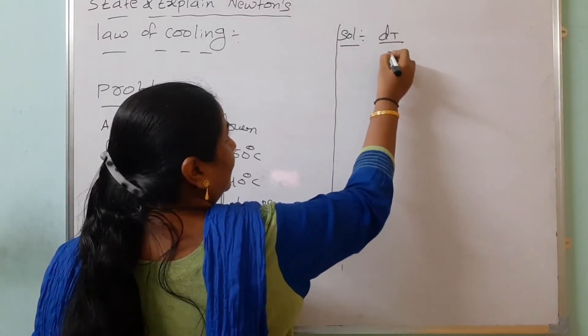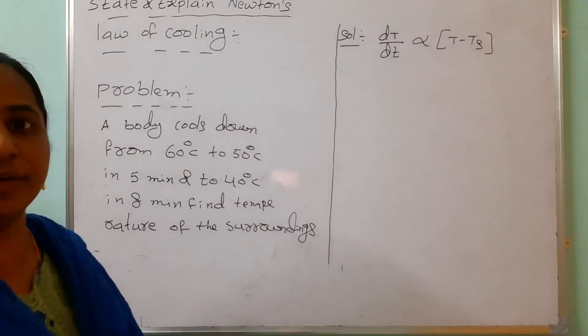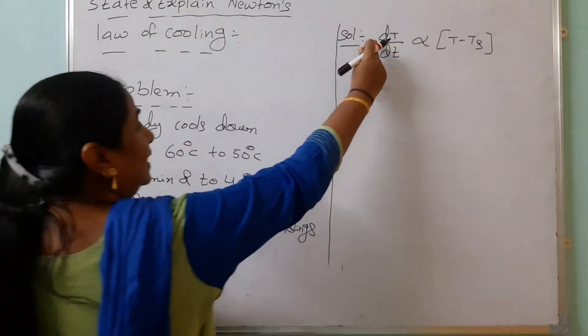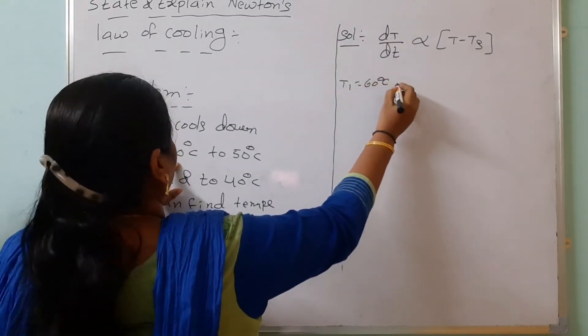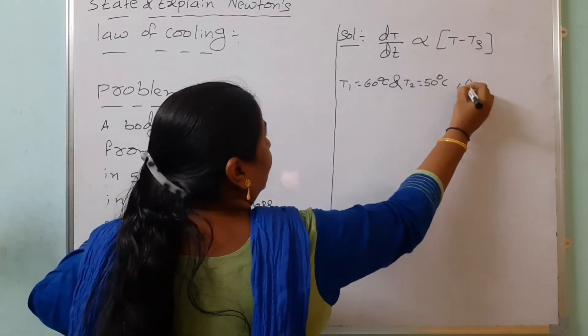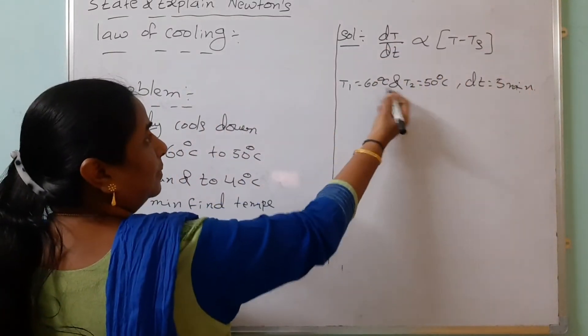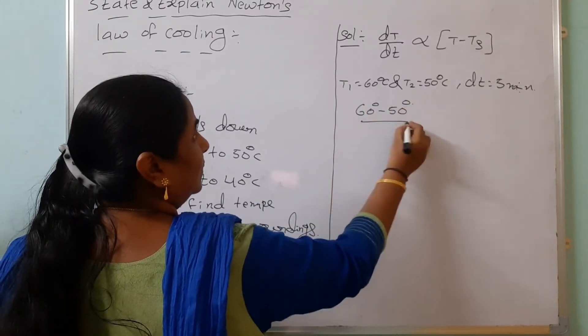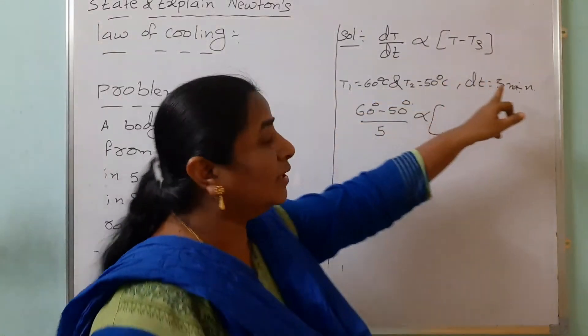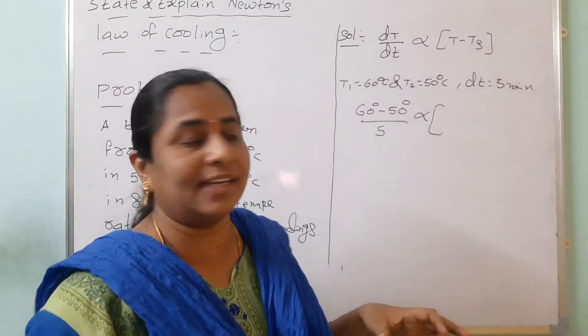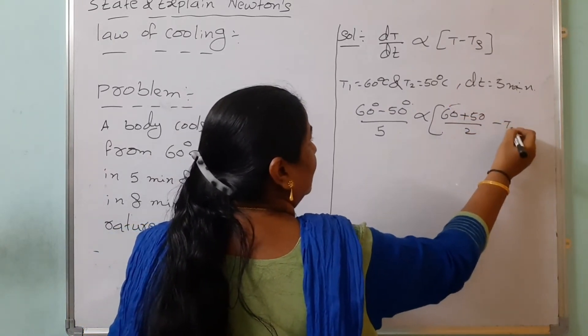We know that DT by dt from Newton's law of cooling is directly proportional to T minus TS. Here DT by dt, case 1 we are applying. T1 is 60 degrees centigrade and T2 is 50 degrees centigrade. Then time difference is 5 minutes. Then we are substituting in this: 60 minus 50 by time is 5 minutes is directly proportional to, here T, how much you are taking the temperature of the body? It is coming from 60 to 50. We are taking the average instead of T. Average of the temperature 60 degrees plus 50 degrees centigrade by 2 minus temperature of the surroundings.